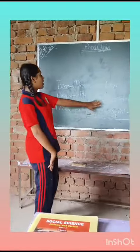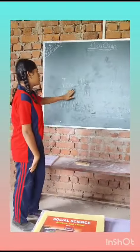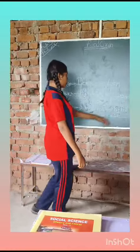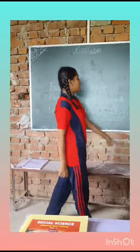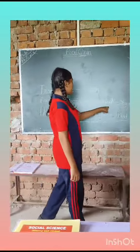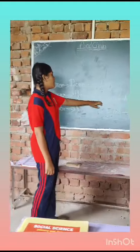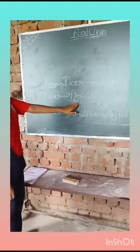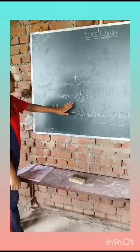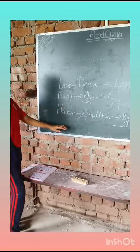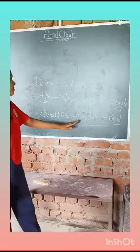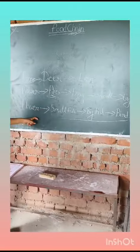Lion eats deer. Deer eats tree. Eagle eats snake. Snake eats frog. Flies eats butterflies. Butterflies eats flower. Birds eats big fish. Big fish eats small fish. Small fish eats flower. Bye-bye.